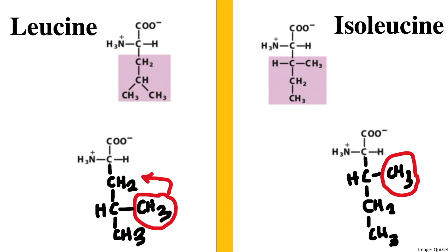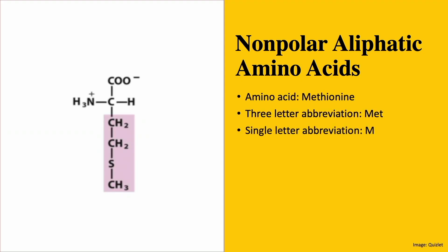Then we have methionine. This is a little different from the previous molecules and is one of the two amino acids that has a sulfur atom in the R group. I don't necessarily have an easy way to remember it, but it's quite easy to memorize.